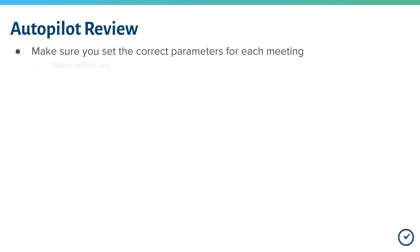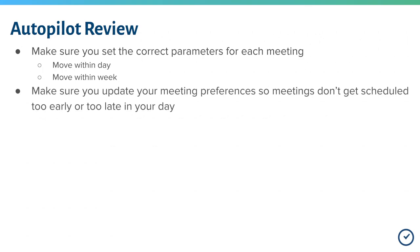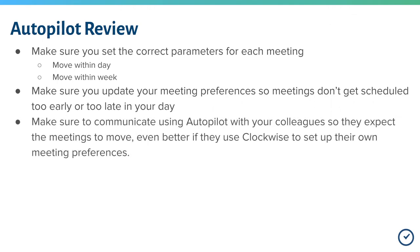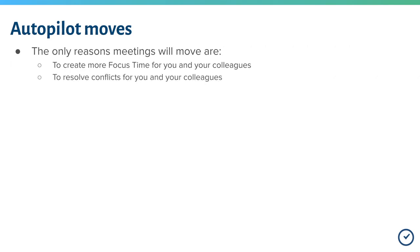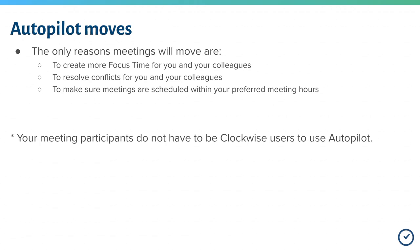Now that you've chosen which meetings to put on autopilot, you've designated how flexible each meeting should be, and you've updated your meeting preferences to ensure all meetings will be rescheduled to a convenient time for you, we consider best practice to be communicating with your colleagues to make sure they know you're using Clockwise, why the meetings will move, and what to expect. Now Clockwise is ready to work its magic. Every day at 4 pm, Clockwise will consider all meetings that are flexible enough to be moved, score how useful moving the meeting will be, and reschedule the meetings to the most efficient times. The only reasons meetings will move are to create more focus time for you and your teammates, resolve conflicts for you and your teammates, and to make sure meetings occur within the meeting preferences that Clockwise users have configured for themselves.